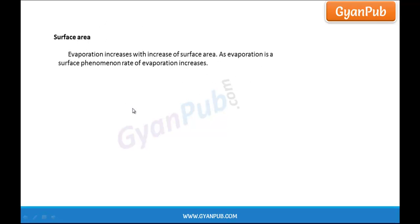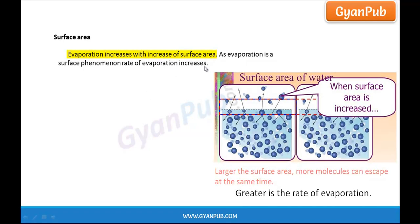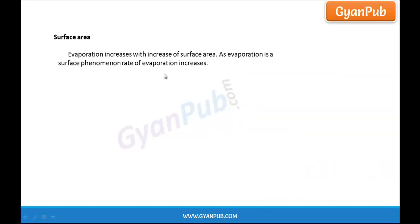Firstly, surface area. Evaporation increases with increase of surface area. So if we increase the surface area of any substance, then the evaporation of it also increases. As evaporation is a surface phenomenon, the rate of evaporation increases. We observe this when drying clothes — we spread out the surface area of the clothes and dry them under sunlight.